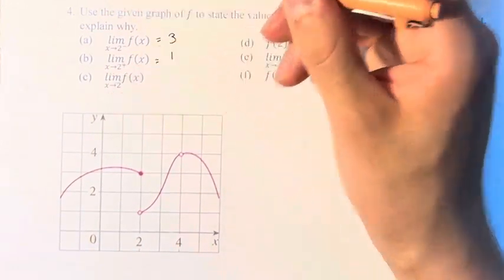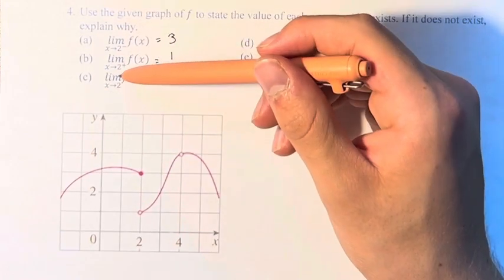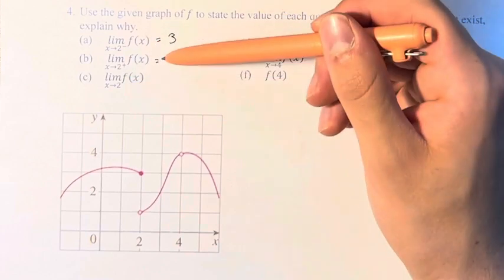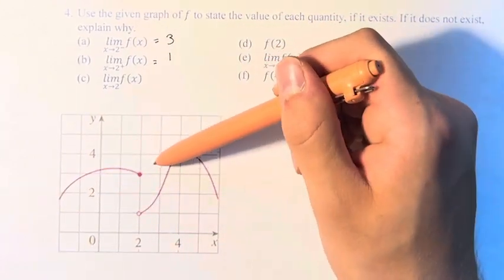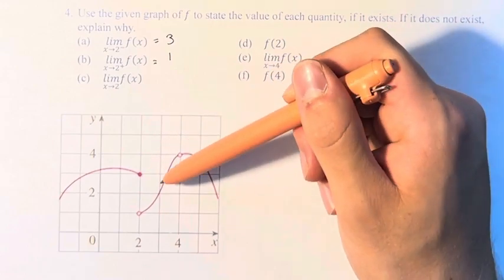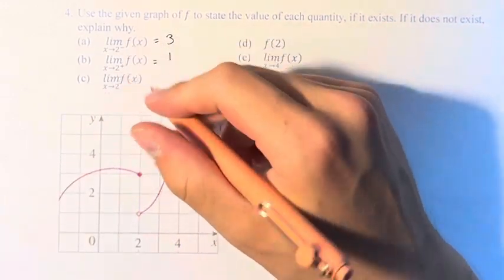The limit of f of x as x approaches 2 does not exist, because from the left and the right it approaches different values, right? So that means as we come to 2, there isn't a common value that we're approaching. The limit does not exist.